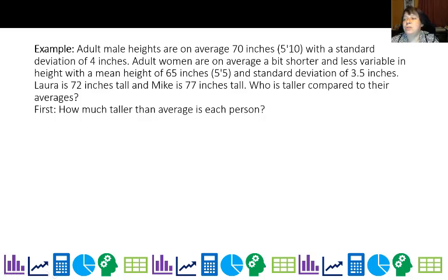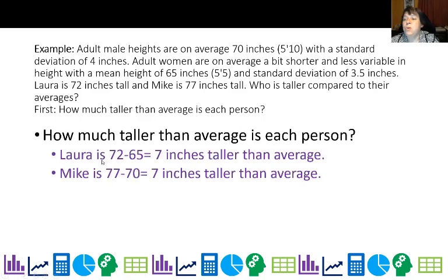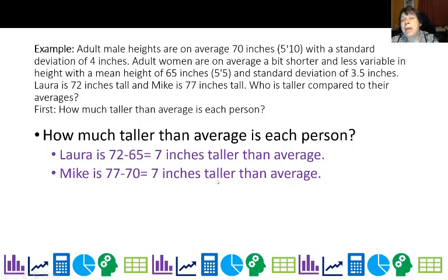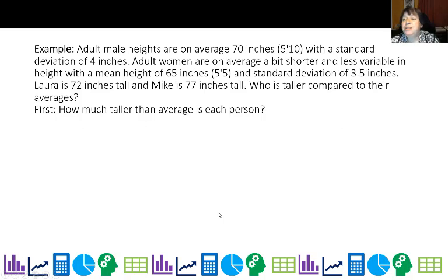Well, first, how much taller than average is each person? Laura is 72 minus 65, which is 7 inches taller than average. Mike is 77 minus 70 inches, which is also 7 inches taller than average. So you might be tempted to say they're both kind of the same compared to their groups — both of them are 7 inches taller. But we really have to take into account scale, which one of my brilliant students mentioned in third period. So let's figure out a way to set up a scale.